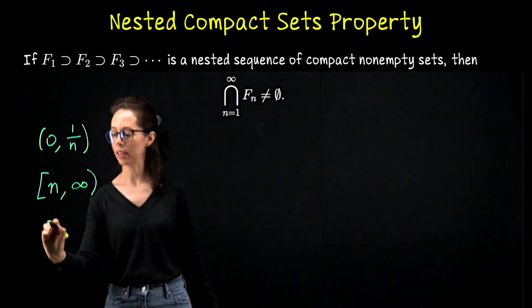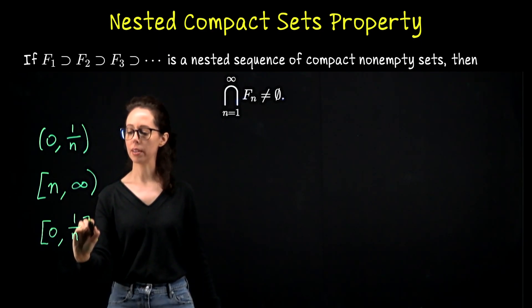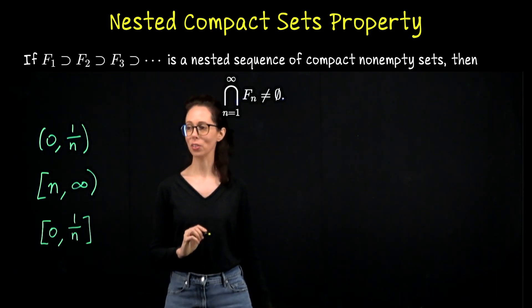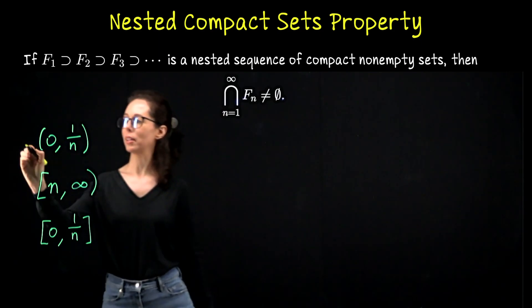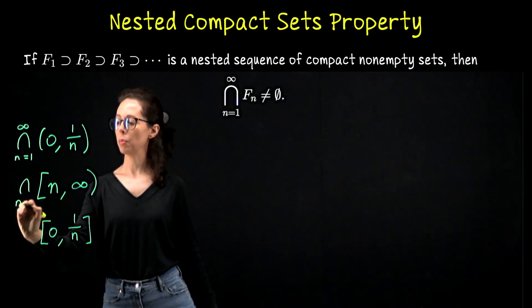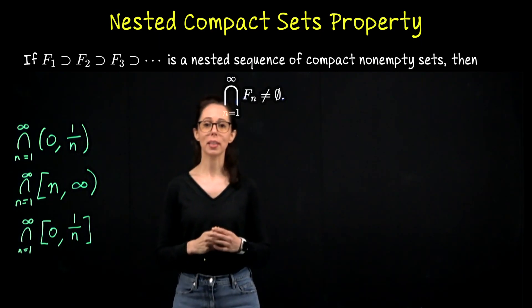For each one we want to take the intersection across the natural numbers. Take a moment if you don't see it yet to pause and work out what the intersection for each of these families should look like.